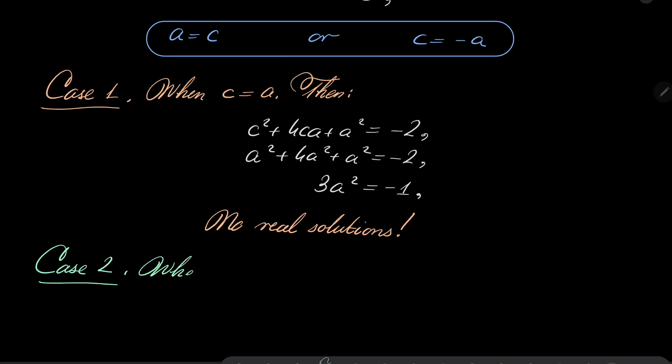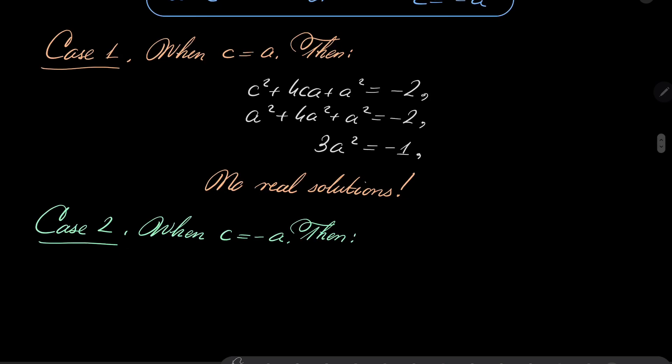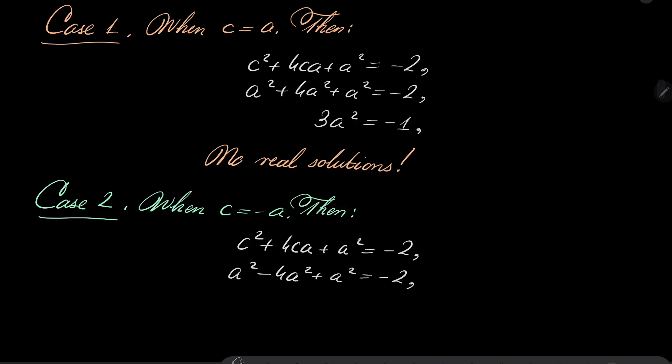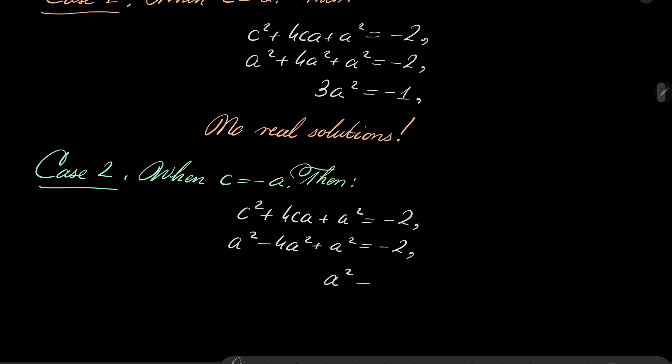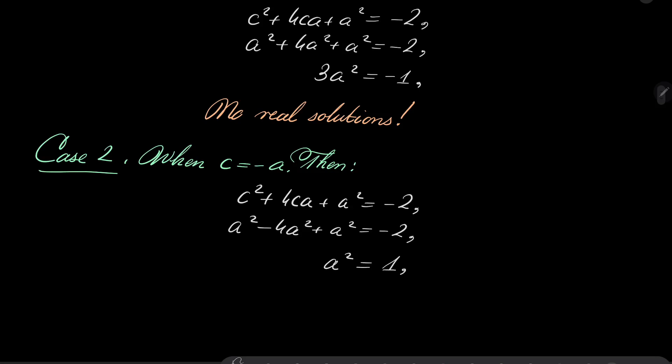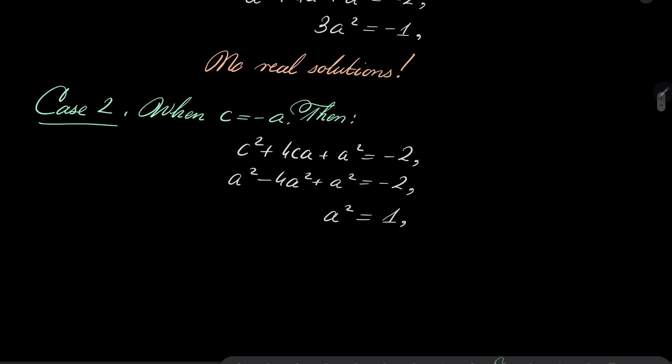You may wish to go further. If you wish to consider complex numbers, then you will get two solutions and you can work everything from there. But since I am interesting only in the real case, I will pass to the second case. Case number two is when c = -a. Notice that then, if c = -a, then the very same equation can be now written in a different way. We have a² - 4a² + a² = -2. And after simplification, it turns out that a² = 1.